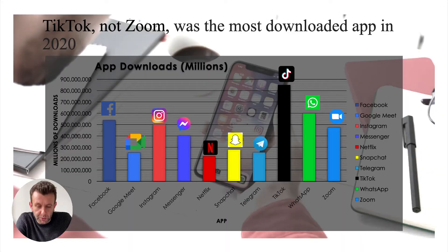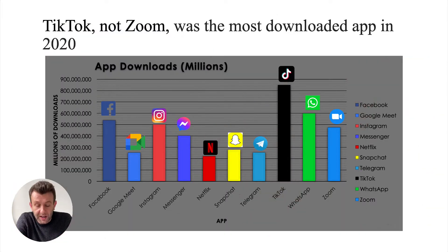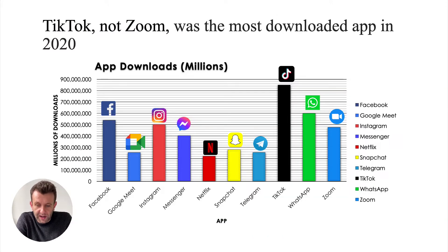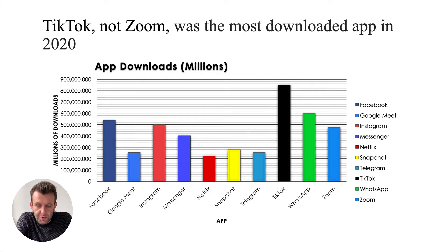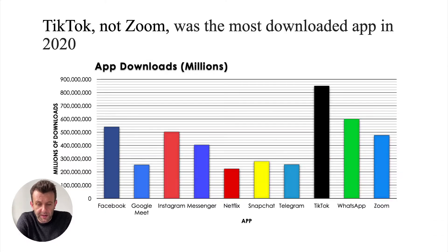Let's increase the data-ink ratio. The best place to always start is the background. We've got this image in the background — let's remove that. Then we've got this grey box behind it still, so let's get rid of that. The next big elements not contributing are these icons, so let's remove the app icons and the key on the right-hand side.